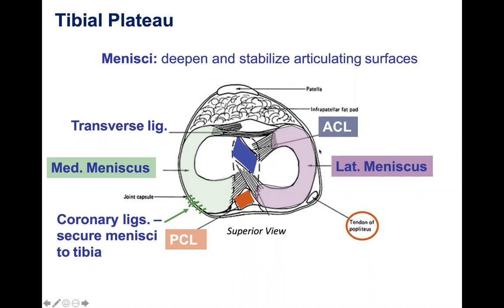The medial meniscus is a little wider from anterior to posterior — larger in diameter with more of a C-shape — because the medial condyle of the femur is larger than the lateral condyle. The lateral meniscus is smaller in diameter and looks more like an O, with consistent thickness throughout its perimeter. The medial meniscus has a very thick posterior horn, which also functions to prevent anterior translation of the tibia — similar to how the ACL protects the knee.